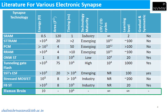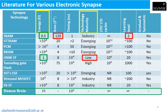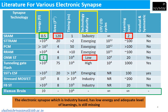People have demonstrated different electronic devices as synapses. SRAM is low energy but requires more area and only offers binary levels of learning. STT-RAM, PCM, and R-RAM are emerging technologies. Organic wire, which has low energy, is not CMOS compatible. An industry-based electronic synapse that has low energy and an adequate level of learning is still missing. Flash is a highly manufacturable device, and its evaluation as a synapse is discussed in the next slide.